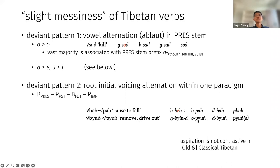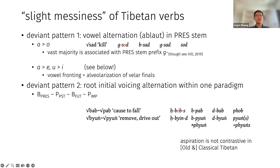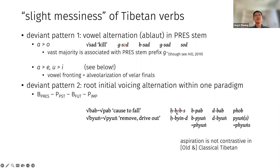One more thing to note: aspiration is no longer contrastive in old and classical Tibetan. If you have a voiceless initial without a pre-initial before it, it becomes aspirated by a phonological rule. So basically Tibetan only has two laryngeal categories: voiced and voiceless. In these sets of examples you also see the vowel alternation from deviant pattern one — the root vowel 'a' ablauts to 'e' in the present stem, and 'u' also ablauts to 'e' in the present stem. This is said to be conditioned by the 's' or 'de' suffix in the present stem, which I'll take as pretty reasonable even though it's not watertight.